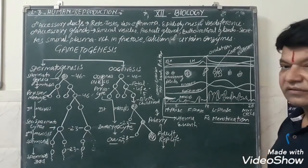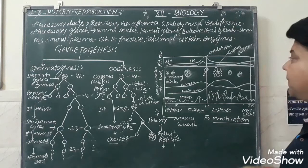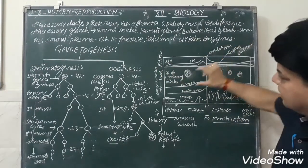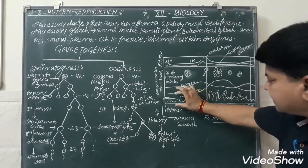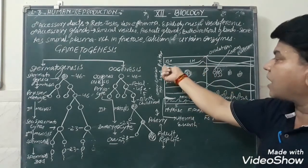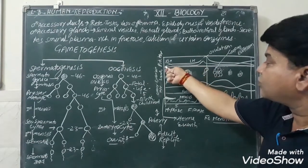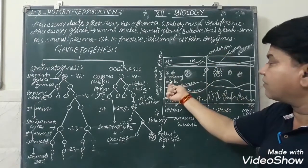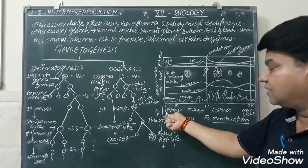Now we go through the very important topic: events in the menstrual cycle. This is a most important question — either a three-mark or five-mark question has been asked in board examinations. Here we can see the pituitary hormone levels, the ovarian hormones, and the uterine events. Four kinds of events take place. First of all, the follicle-stimulating hormone level, and at the time of the 14th day — these are the developing follicles in the ovary.